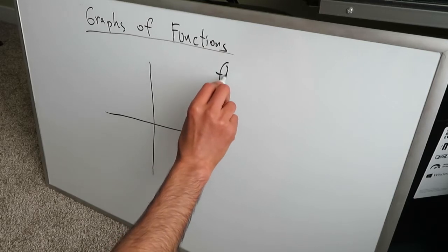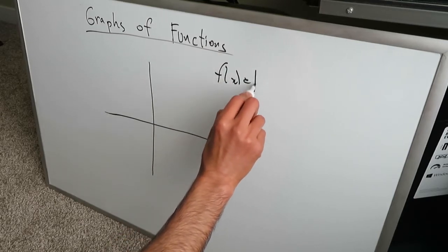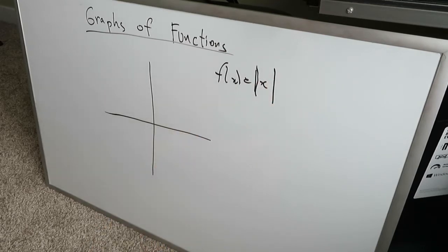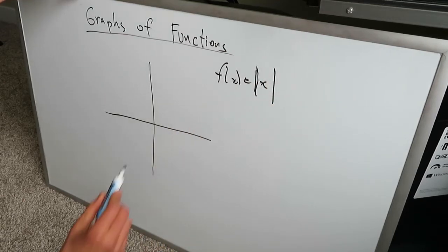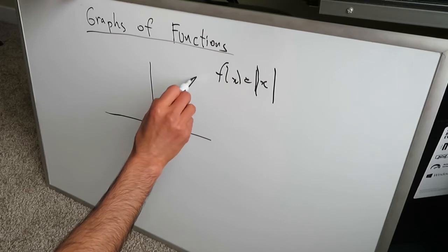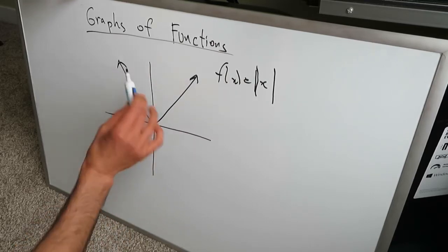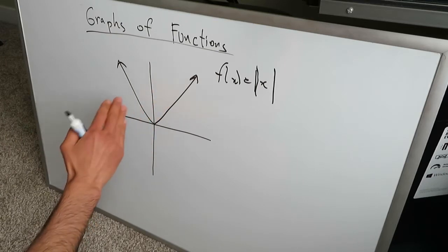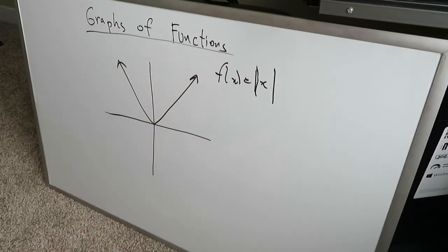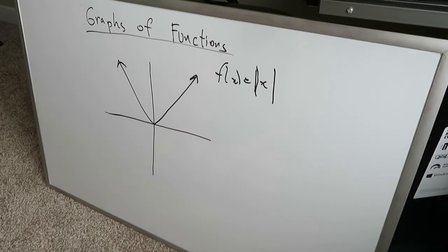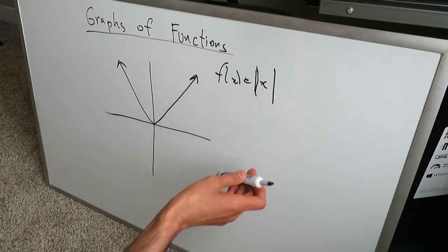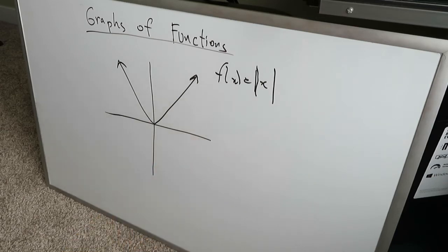f of x is equal to absolute value of x. Remember that absolute value sign. The basic graph of an absolute value is a vertex at the origin extending this way, with y-axis symmetry reflected across the y-axis, so it's symmetrical about the y-axis. This is what absolute value of x, the basic graph looks like. There's no translation, no vertical or horizontal shift at all.